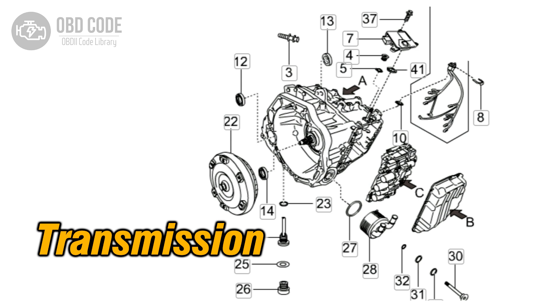If the actual gear ratio does not match the expected value for second gear, the code is set and the check engine light (CEL) is illuminated.